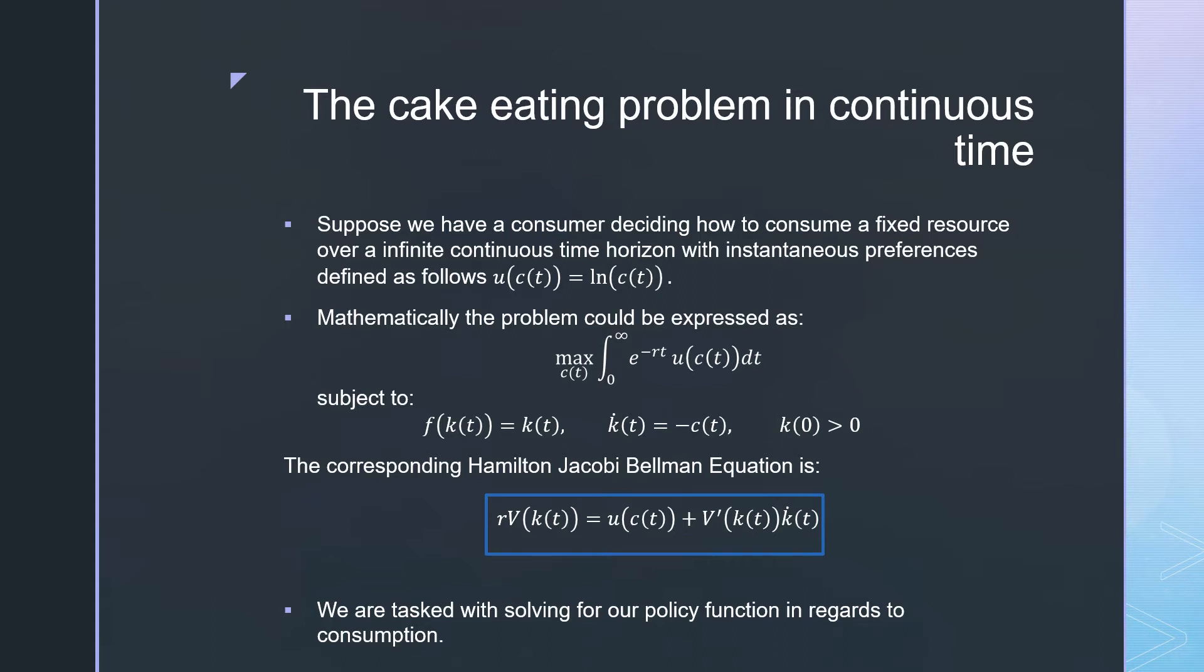The corresponding Hamilton-Jacobi-Bellman equation, which is just the Bellman equation for a continuous time model, is as follows.